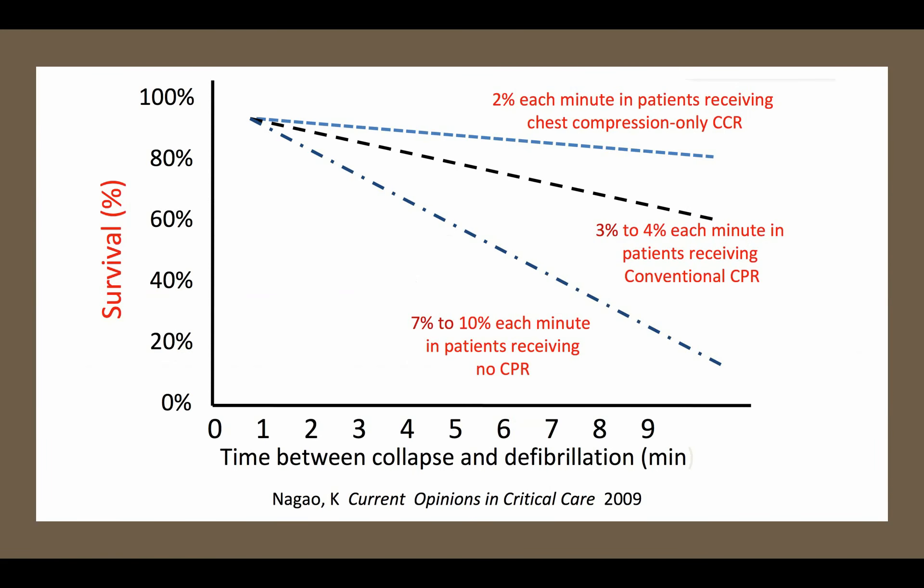There is a clear correlation between high performance CPR and survival. This commonly used graph shows that without CPR, each minute that goes by is correlated with a 10% decrease in survival. However, cardiac arrest is reversible. With high quality CPR we can decrease that decline from 10% per minute to just 2% per minute. So if we arrive on scene and initiate high performance CPR, we can dramatically improve the patient's chance of surviving.